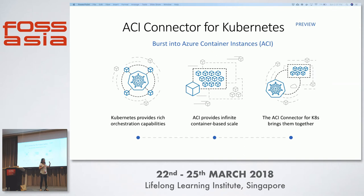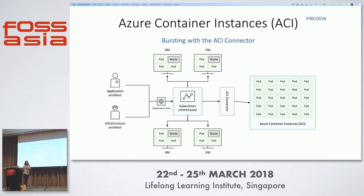The ACI connector is an open source project — it's actually not called ACI connector, this is just Azure's implementation of it. This connector looks just like a virtual node in your cluster, and whenever you decide to spin things out to that node, it'll spin out into a completely different service. It won't be in your cluster — it'll be somewhere else — but you still get to manage it and see it the way you would in a normal cluster.